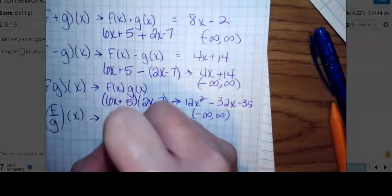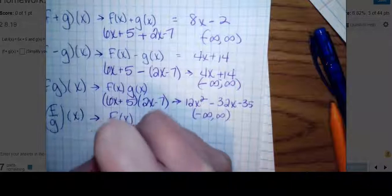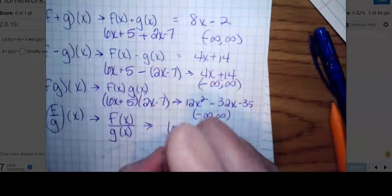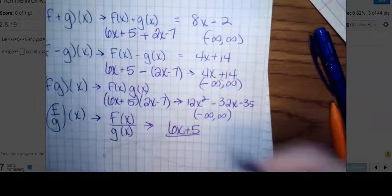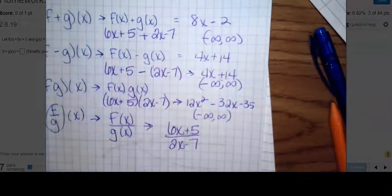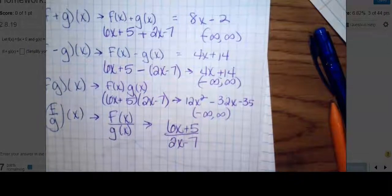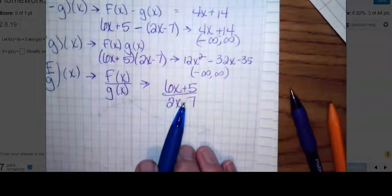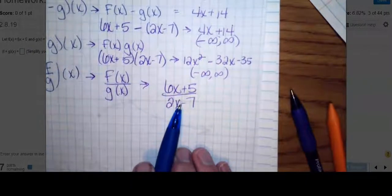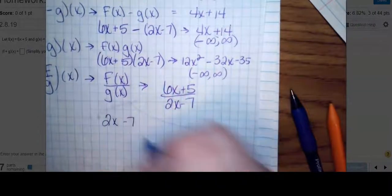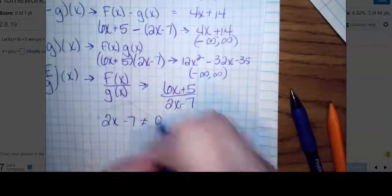Last one. This is really saying f(x) over g(x). Do I know what f(x) is? It's 6x+5. Do I know what g(x) is? It's 2x-7. None of that reduces. So all I have to do now is find the domain. Oh my goodness, there's a variable in the denominator. So we say this denominator cannot equal 0, otherwise my function is undefined.